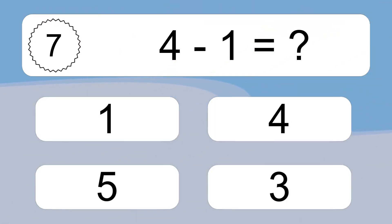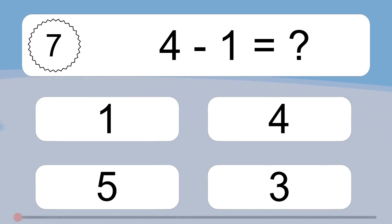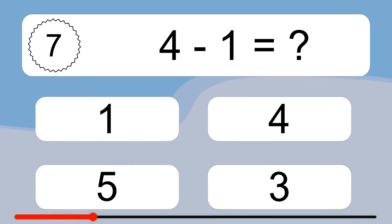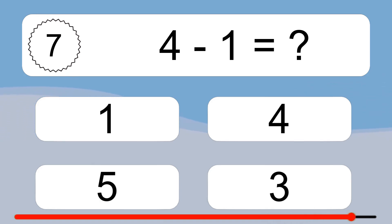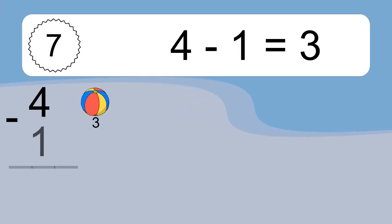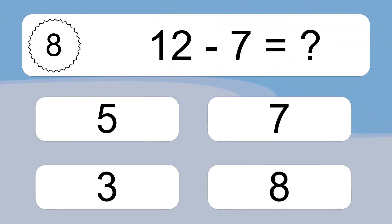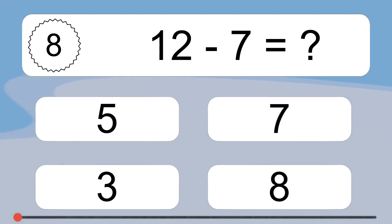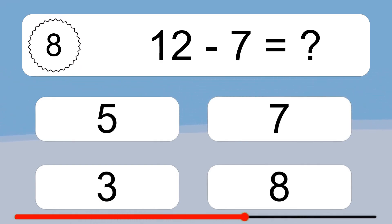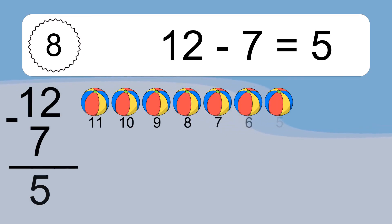16 minus 1 equals what? 4 minus 1 equals 3. Let's count it: 13, 12. 12 minus 7 equals what? 12 minus 7 equals 5. Let's count it.